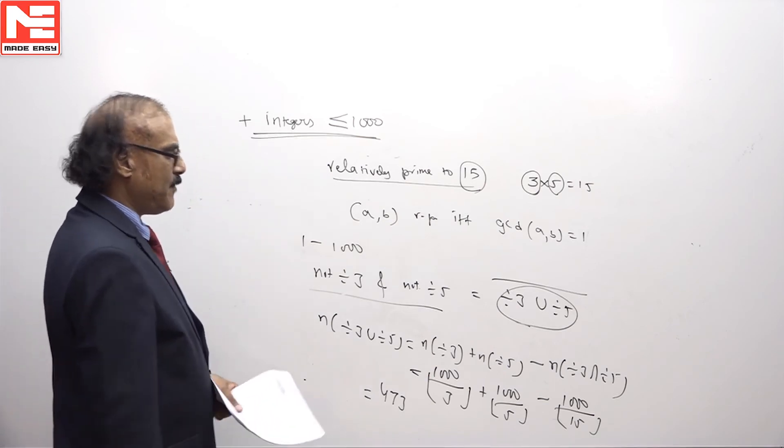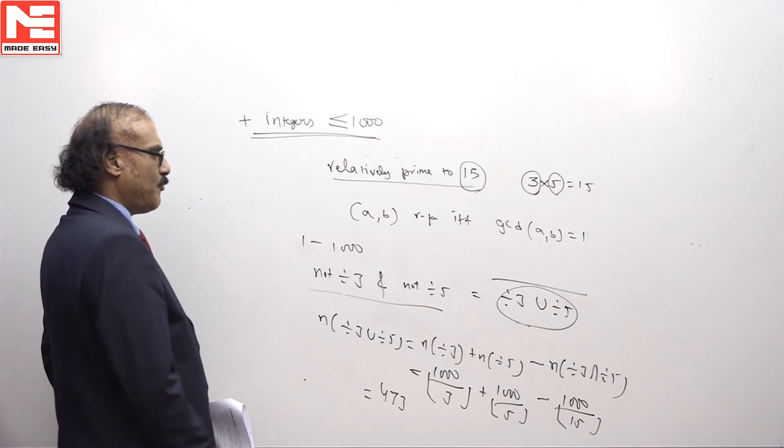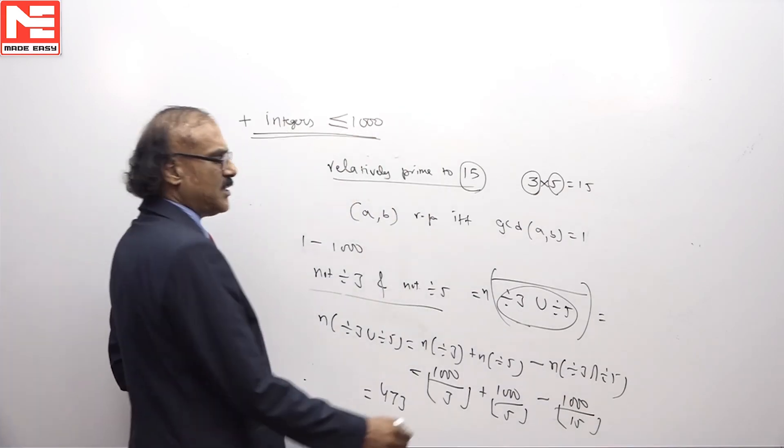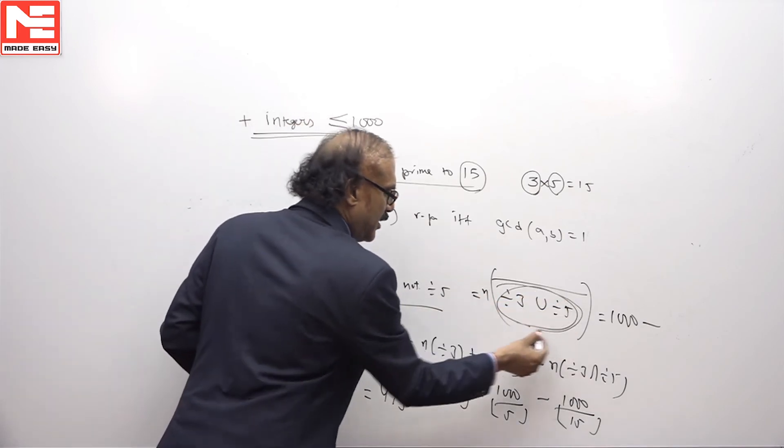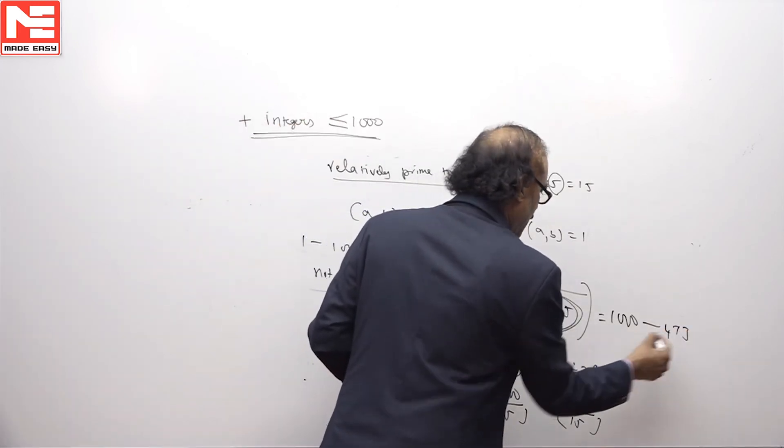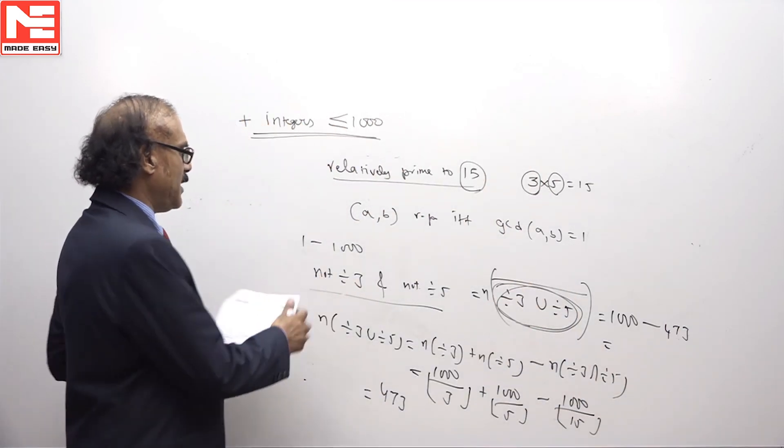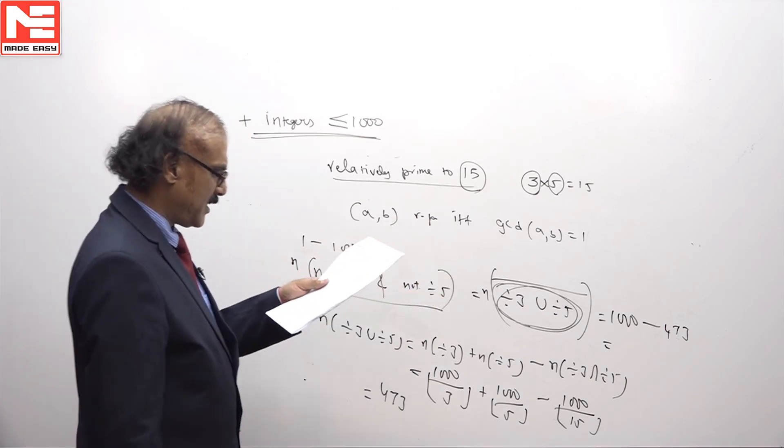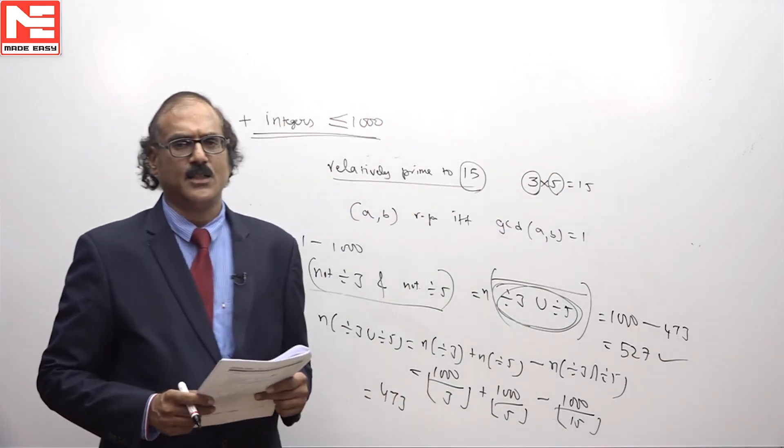But we want the complement of this. To find out the number of numbers which are not divisible by 3 and not divisible by 5, we take the universal set that is 1000 numbers minus 473, which equals 527, which is the answer to this problem.